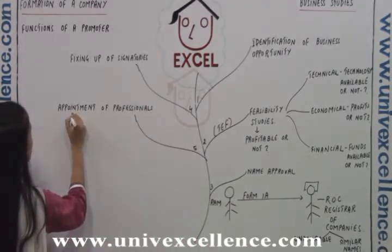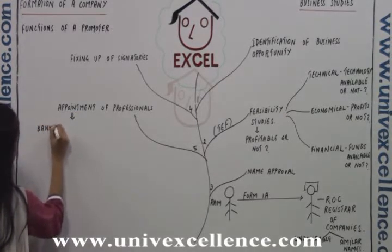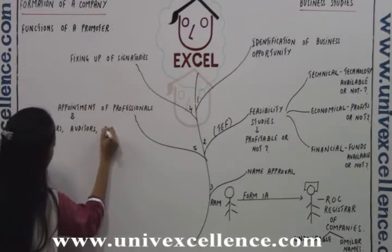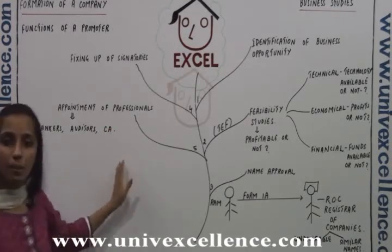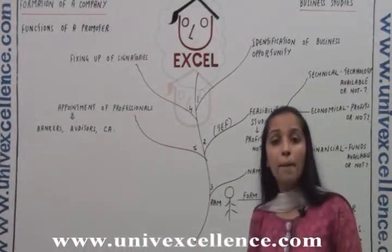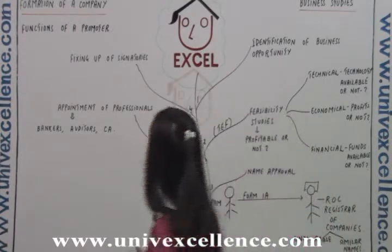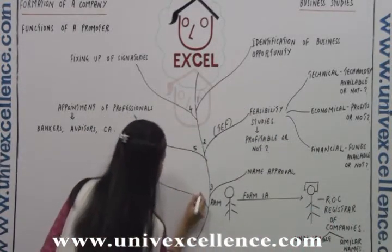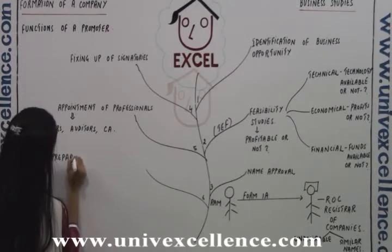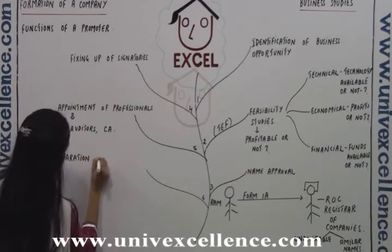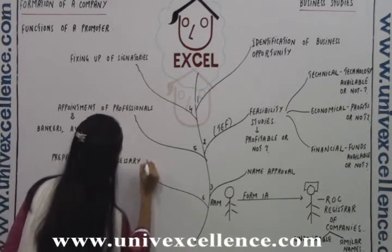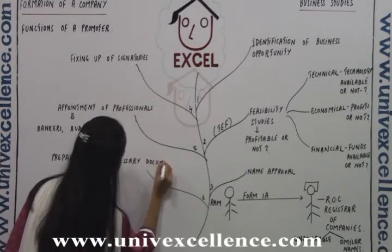Appointment of professionals like bankers, auditors, and chartered accountants are appointed to assist the promoters in the formation of the company. The last function is preparation of necessary documents — the sixth function.